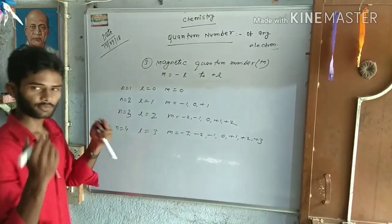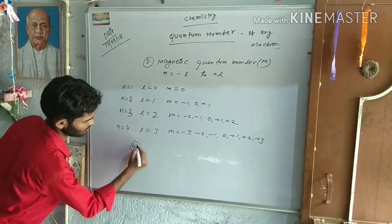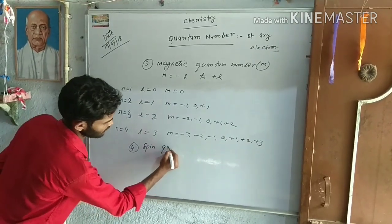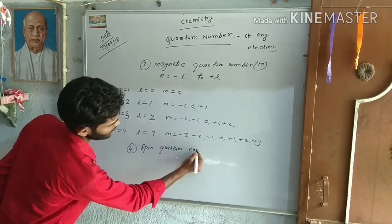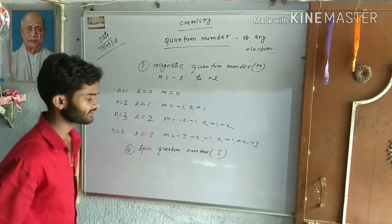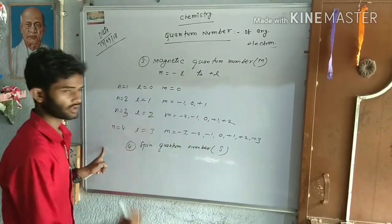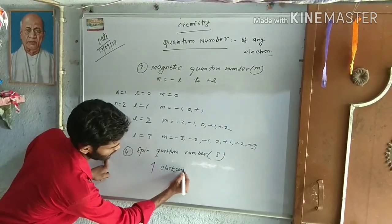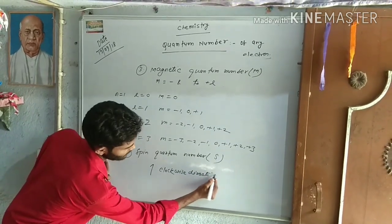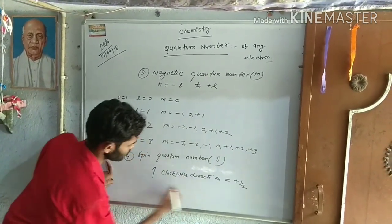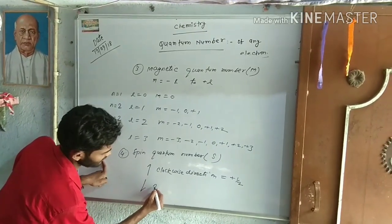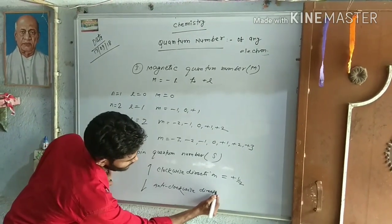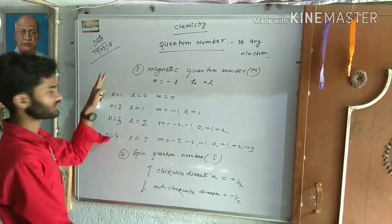The fourth quantum number is spin quantum number, which describes the electron's spin direction. It is denoted by S. There are two directions: clockwise direction, with value +1/2, and anti-clockwise direction, with value −1/2.